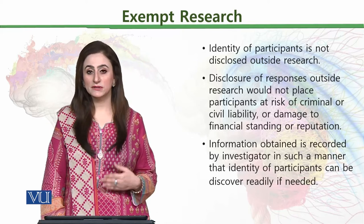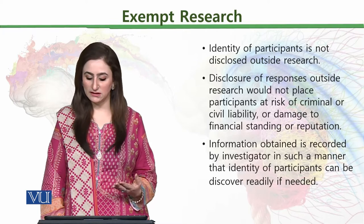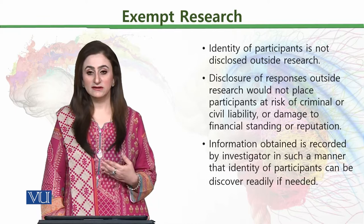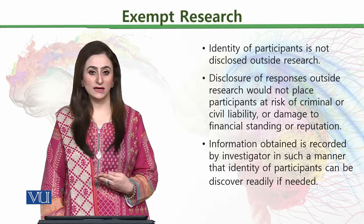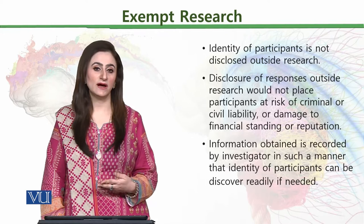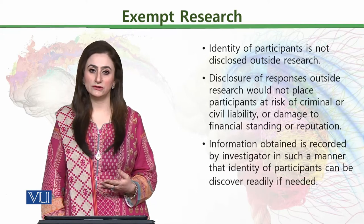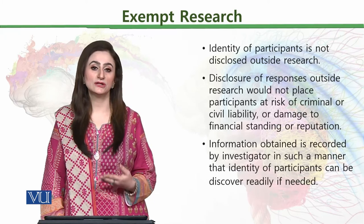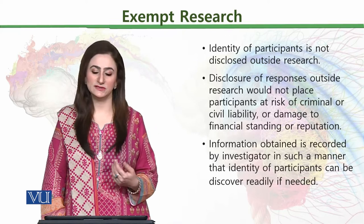The third criterion is that information obtained is recorded by the investigator in such a manner that the identity of participants can be discovered if needed — meaning it is disclosed in a form where, at any point in time, identity can be retrieved. This also qualifies as a criteria for exempt research.